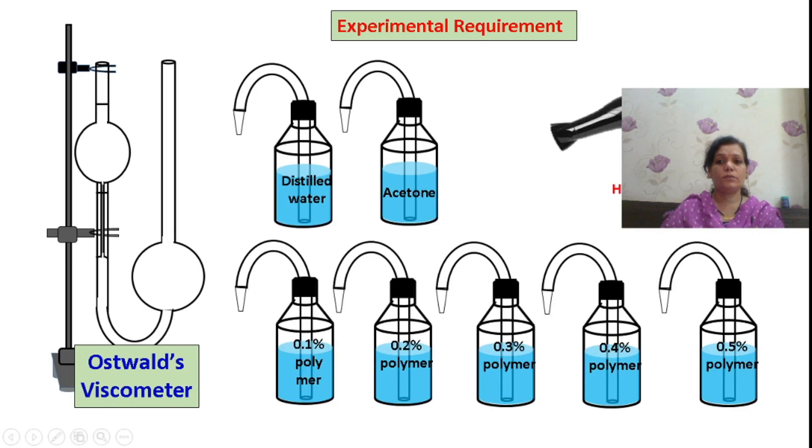You'll need distilled water, acetone, hair dryer. You need to utilize the dryer so that the part of our interest gets clean and dried while measuring time of flow. And all these percent solutions of polymer.